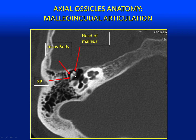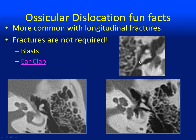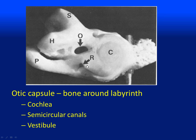Looking at the ossicles, you want to make sure that the malleus and the incus are still located together, that this joint is not widened, and that the head is not completely dislocated. Here's the malleus, and this is the incus with the body and the short process. Note that you don't have to have a fracture to have ossicular dislocation — explosions can cause the ossicles to dislocate, and the self-defense ear clap technique, where you slap the assailant's ears with closed hands, can also disrupt the ossicles.